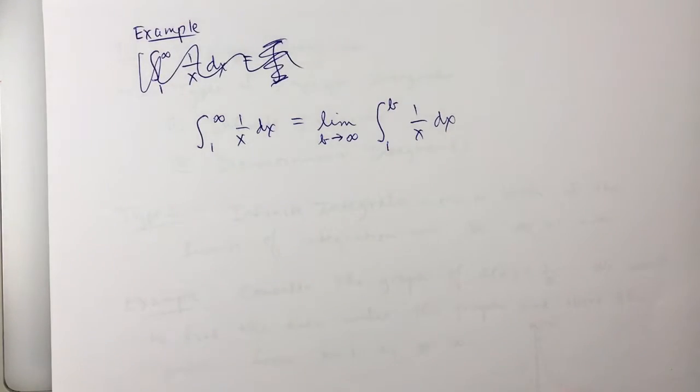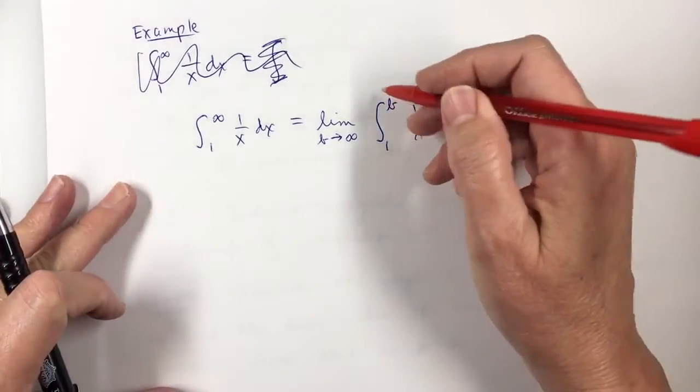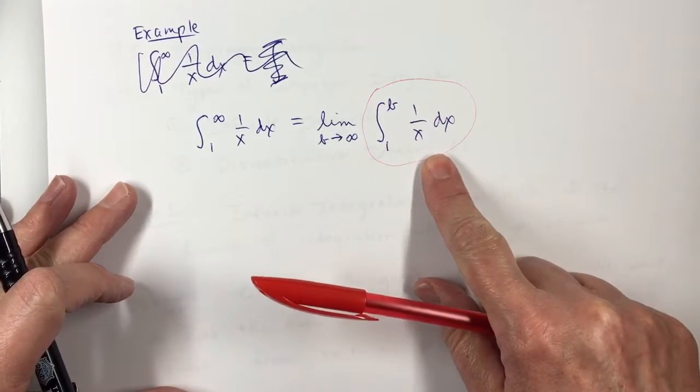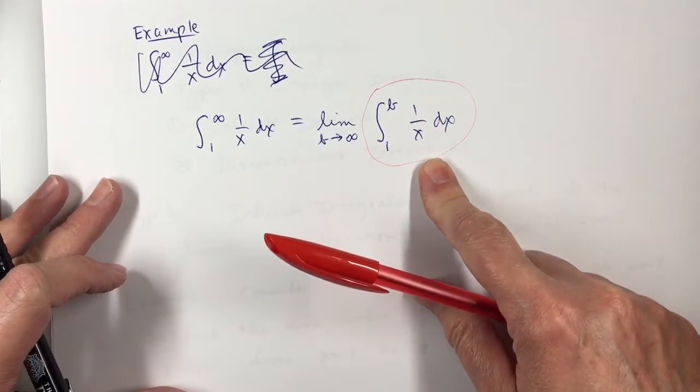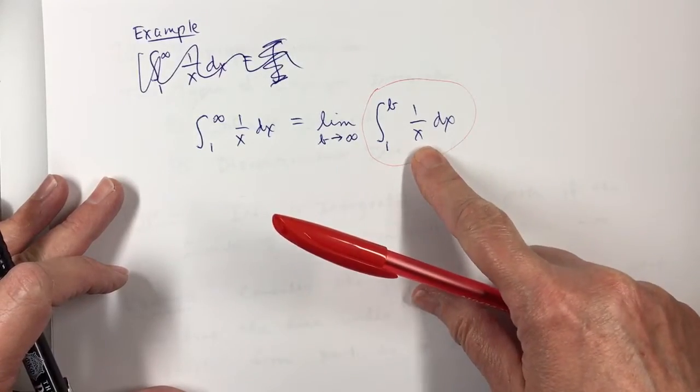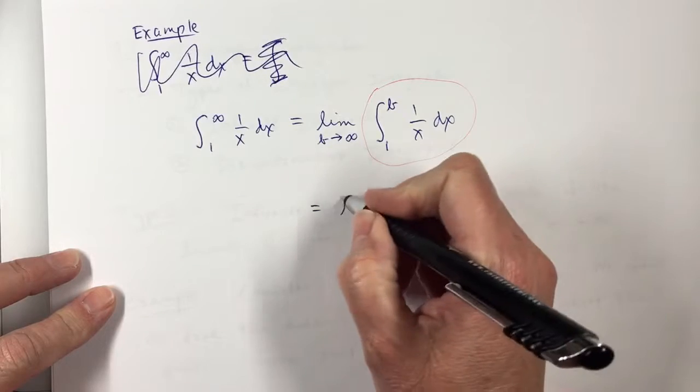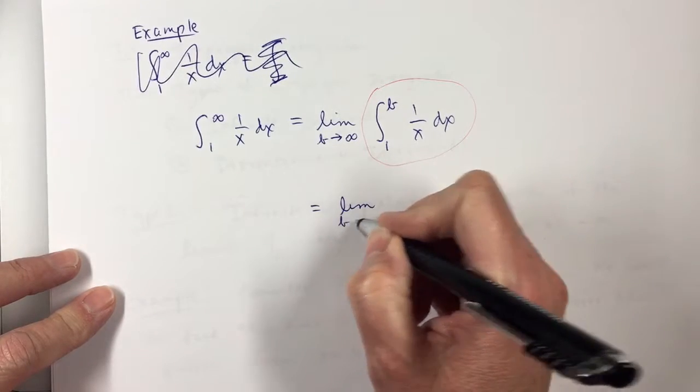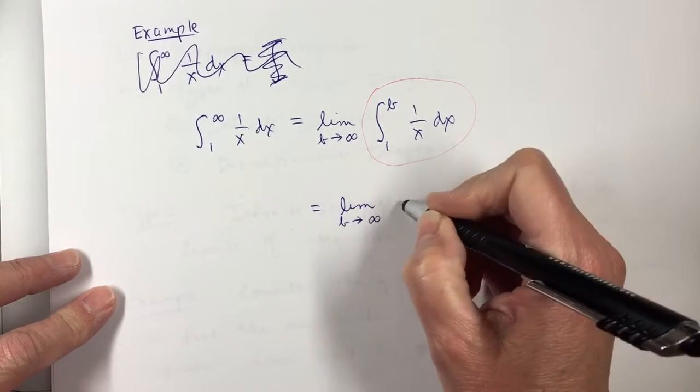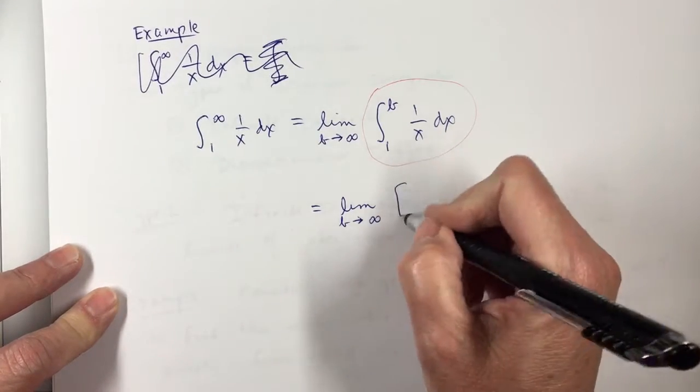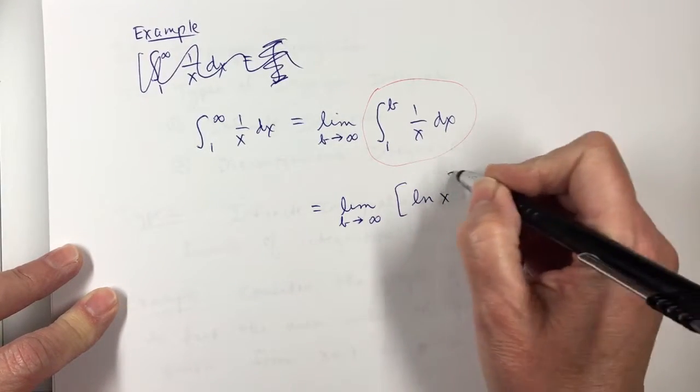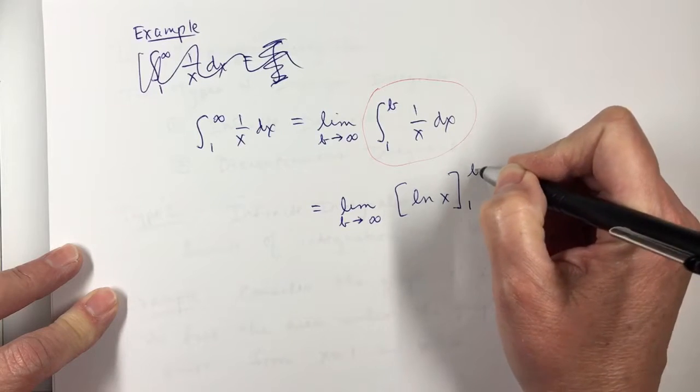Now, I need to do this part right here, and that's fairly easy. Let's see. What's the antiderivative of 1 over x dx? Ln. So, this is the limit as B approaches infinity of the natural log of x, and we're going from 1 to B.